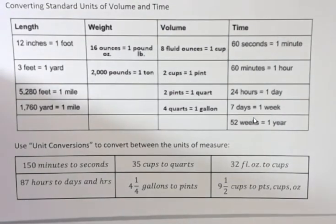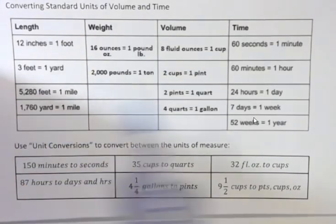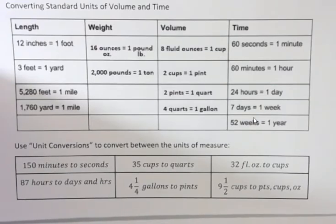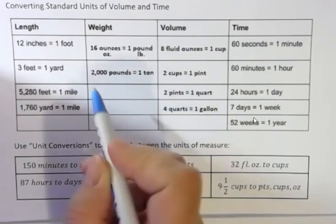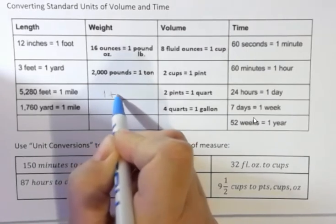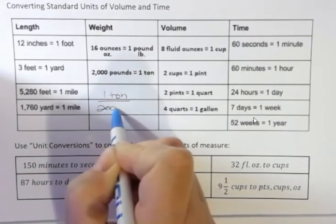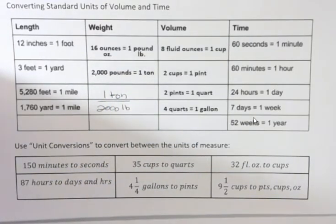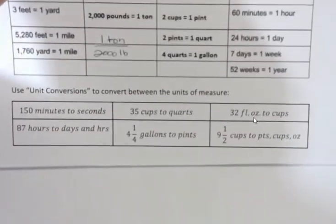Hi, it's Carly McAvoy talking about converting standard units of volume and time. This is the chart that has all the conversions we're going to be using in the next few videos. I'm going to work six problems using the unit conversion method, where we set up a fraction equal to one. For instance, one ton over 2,000 pounds equals one, because one ton is equal to 2,000 pounds — so it's like multiplying by one. That's what unit conversions actually mean.